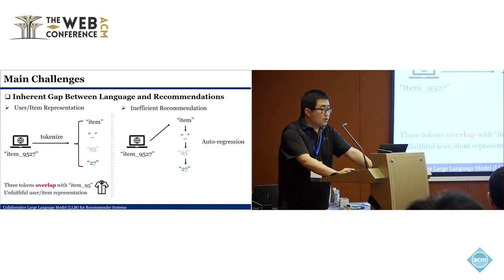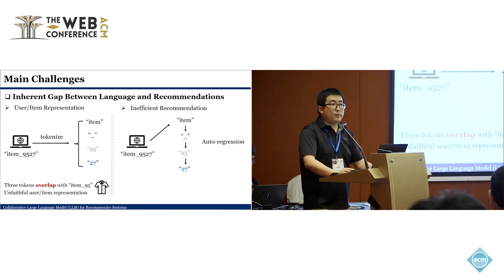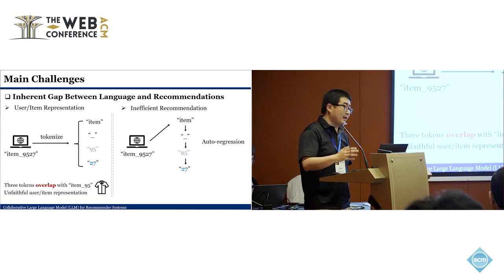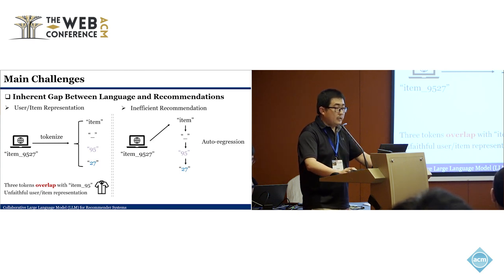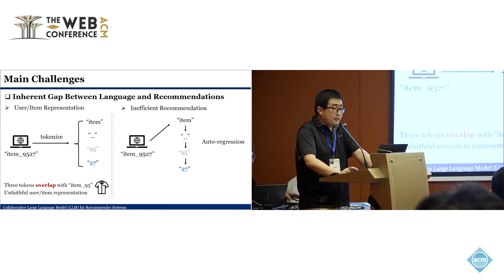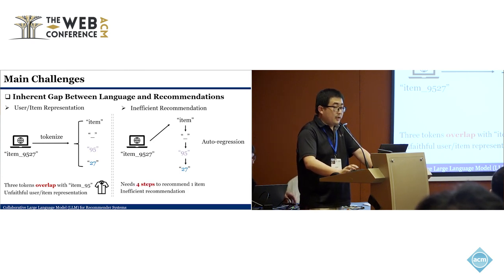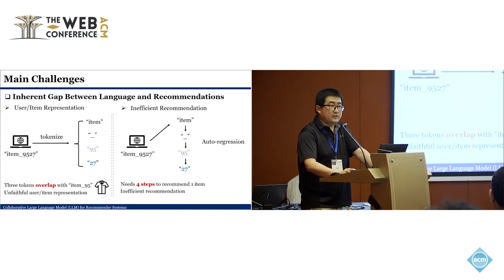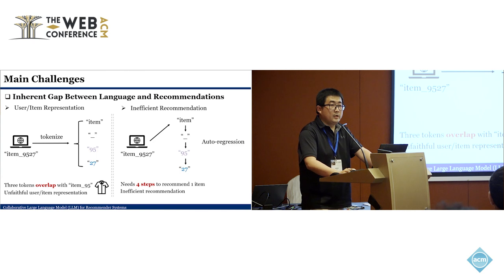Another problem is that natural language modeling is typically performed in an autoregressive manner, predicting one token at a time. For a particular item ID, making a recommendation would require predicting four tokens in sequence — four steps per recommendation. This is super inefficient.